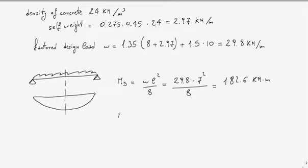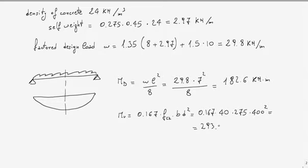My Mμ, considering C40 concrete, can be written as 0.167 times fck·b·d², which is 0.167 times 40 times 275 times 400². This gives 293.9×10⁶ Nmm, which equals 293.9 kN·m.